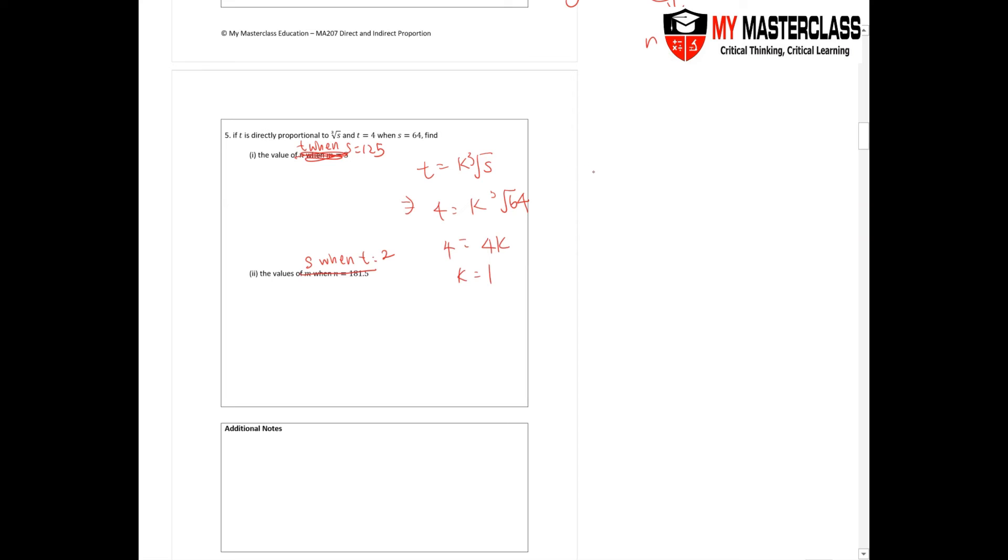They're asking you to find the value of T when S is 125. So you know that this is cube root S. So when S is 125, T equals to cube root 125, so you should be having a 5 as your answer.